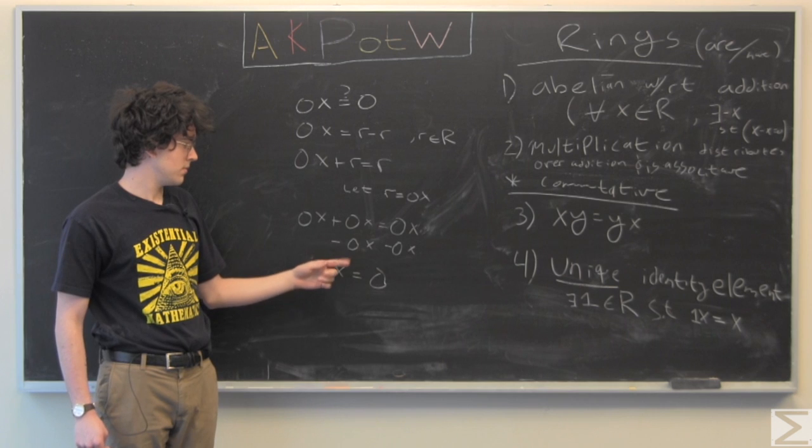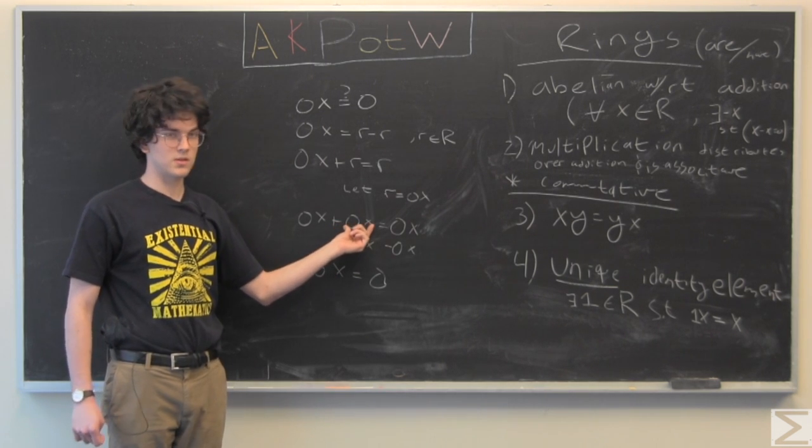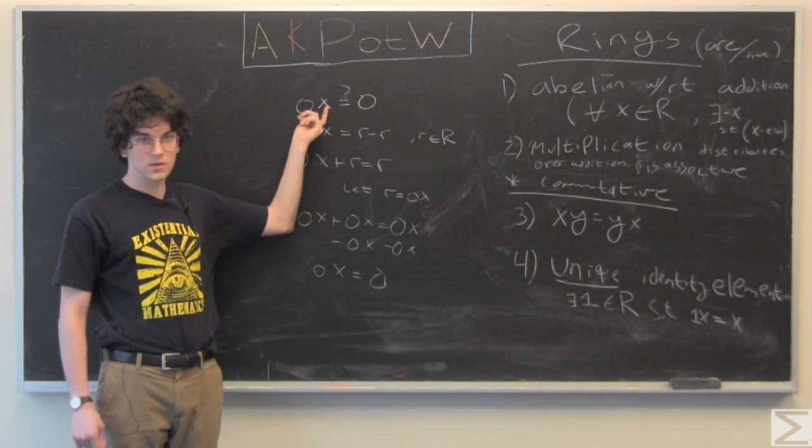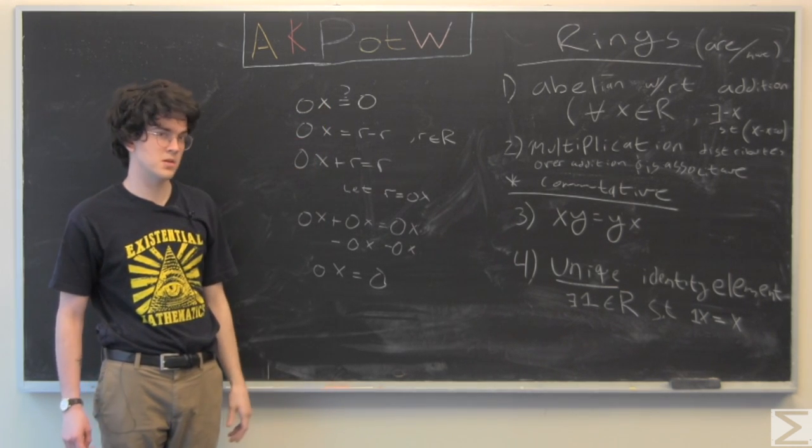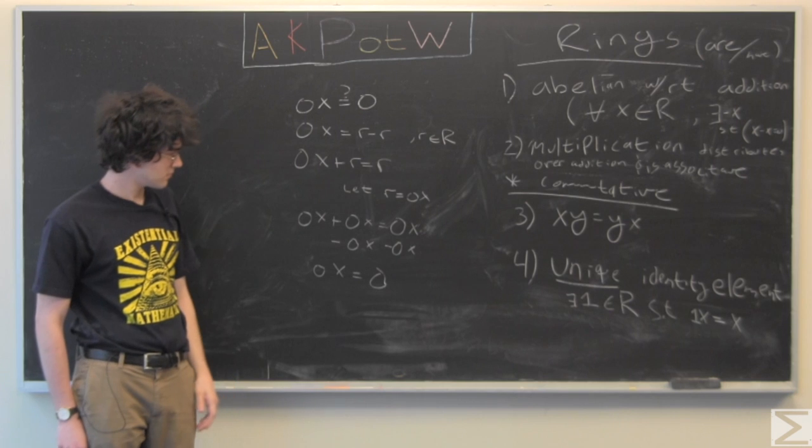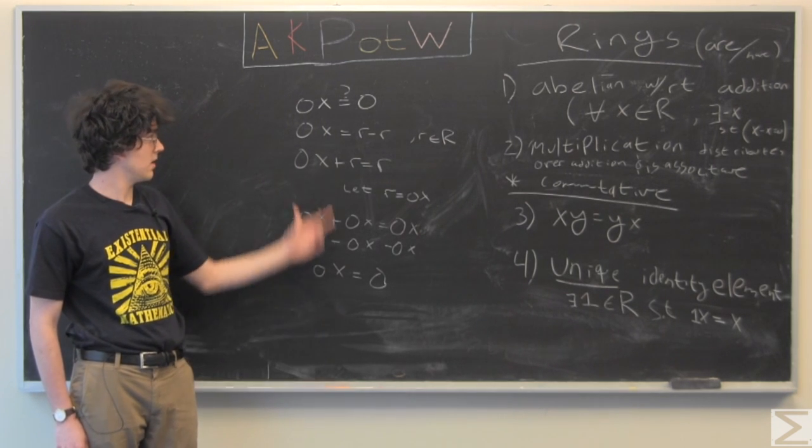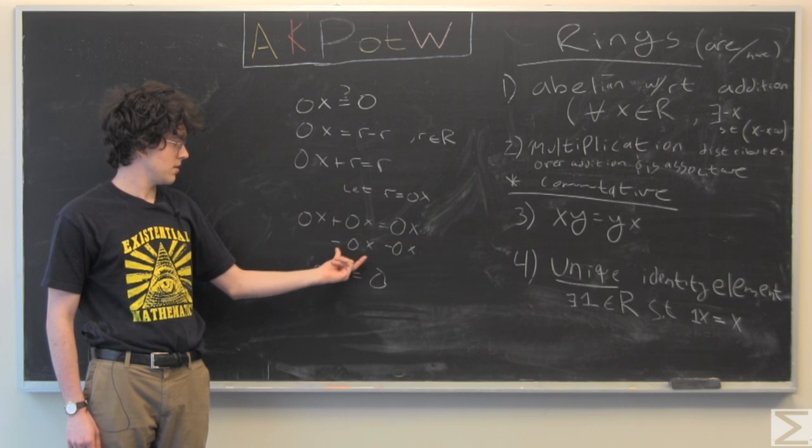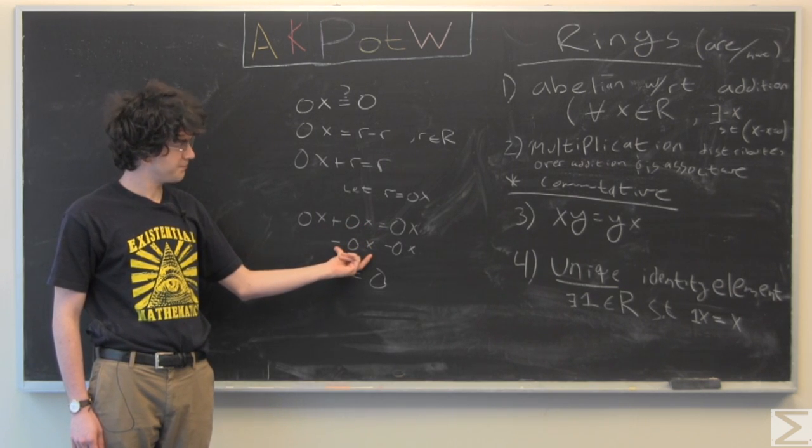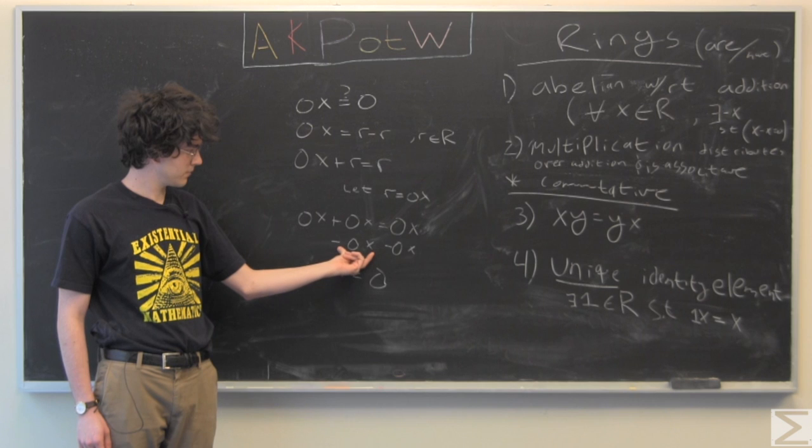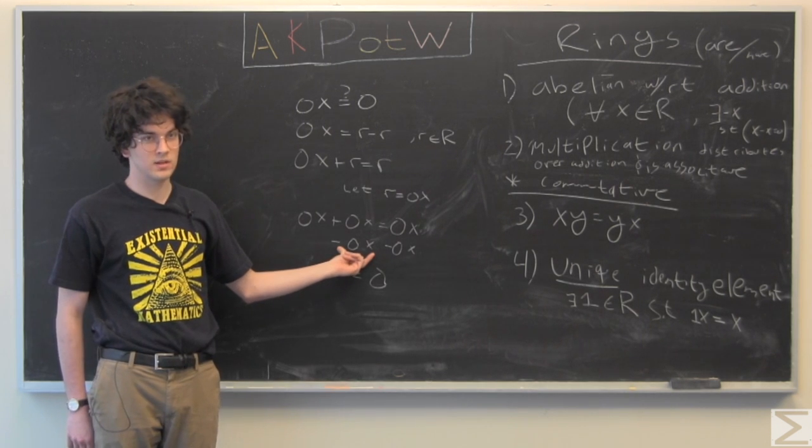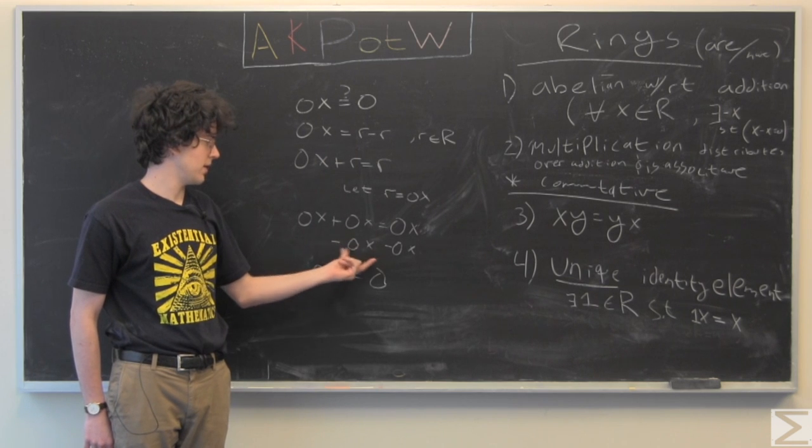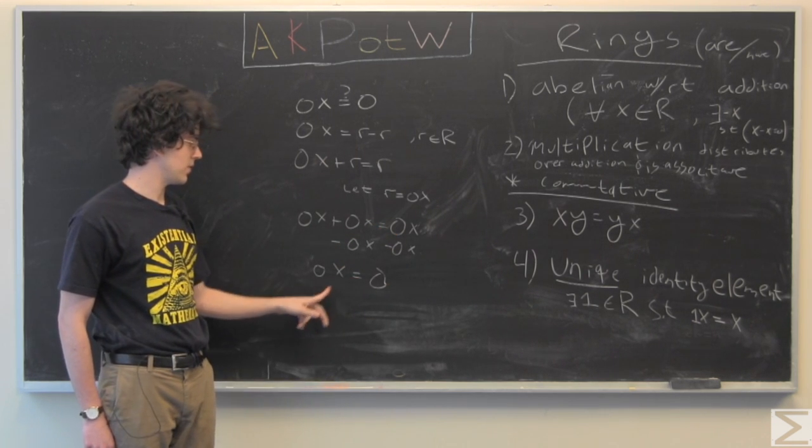So, then we know that this 0x, we've assumed that 0x is in our ring. And because it is given here, we have our 0x, we add its additive inverse to 0x on both sides. So, we have 0x equals 0.